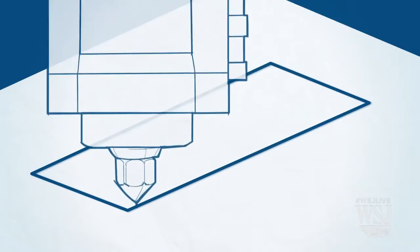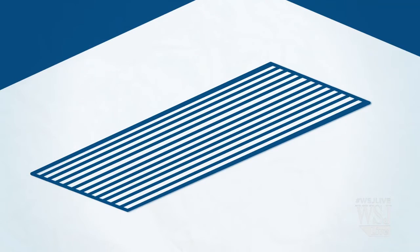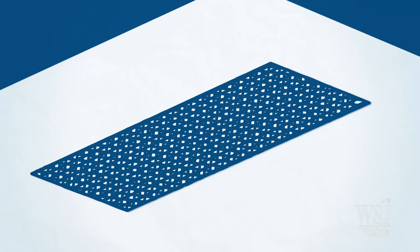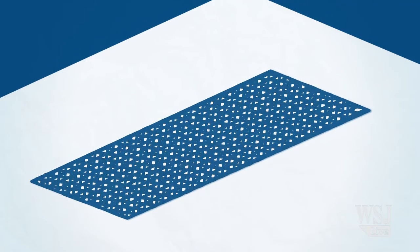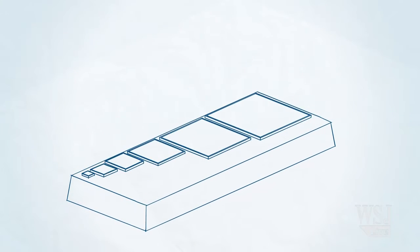The printhead starts by making an outline of the first layer. Then the outline is filled in with a cross-hatched pattern. The build plate moves down, and the next layer is outlined and filled, layer upon layer, until the final object is fully rendered.